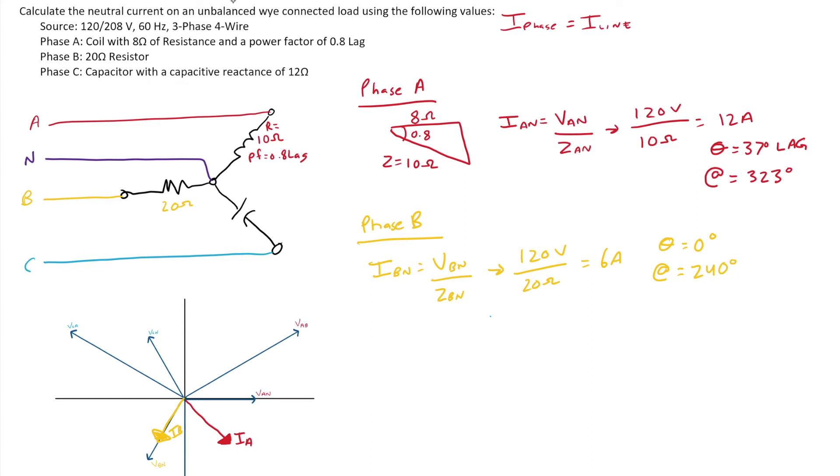Lastly, we have phase C. Now phase C, we're going to do the exact same thing here. We were told it was a capacitor with 12 ohms of capacitive reactants. So we'll go IC to N equals VC to N divided by ZC to N. 120 volts is our phase voltage, we're talking about a capacitor in the phase divided by 12 ohms. It gives us 10 amps.